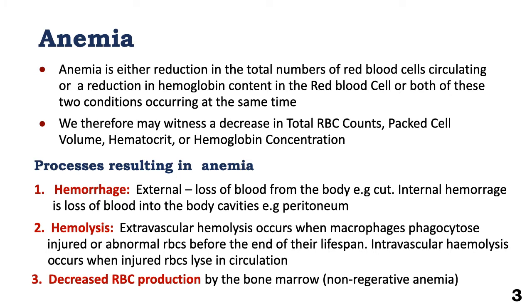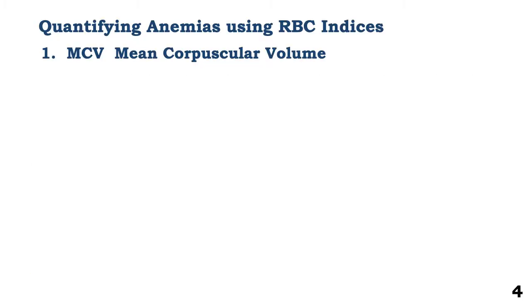Anemia may be caused by decreased red blood cell production by the bone marrow, and this is known as a non-regenerative anemia. Quantifying anemia using red blood cell indices: the first index we are going to look at is mean corpuscular volume, or MCV.